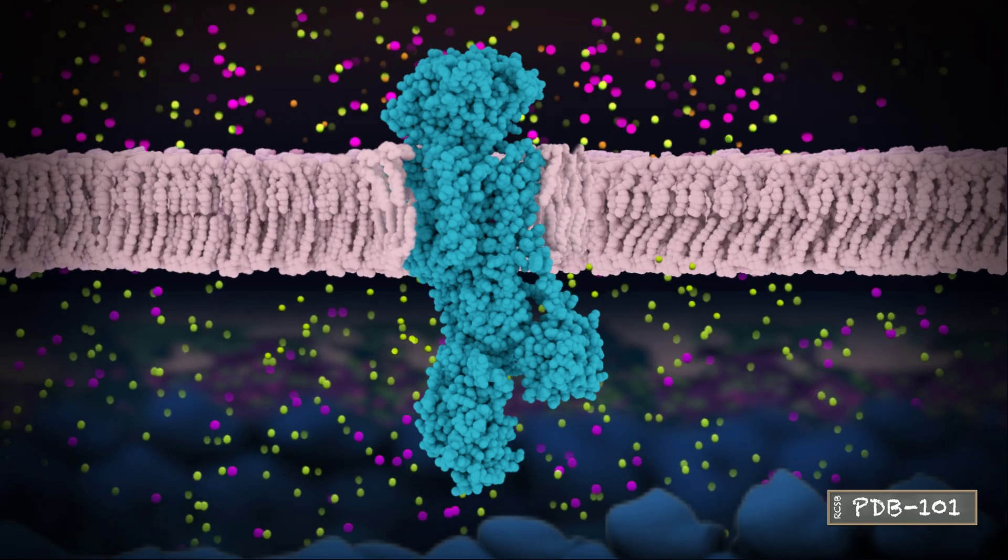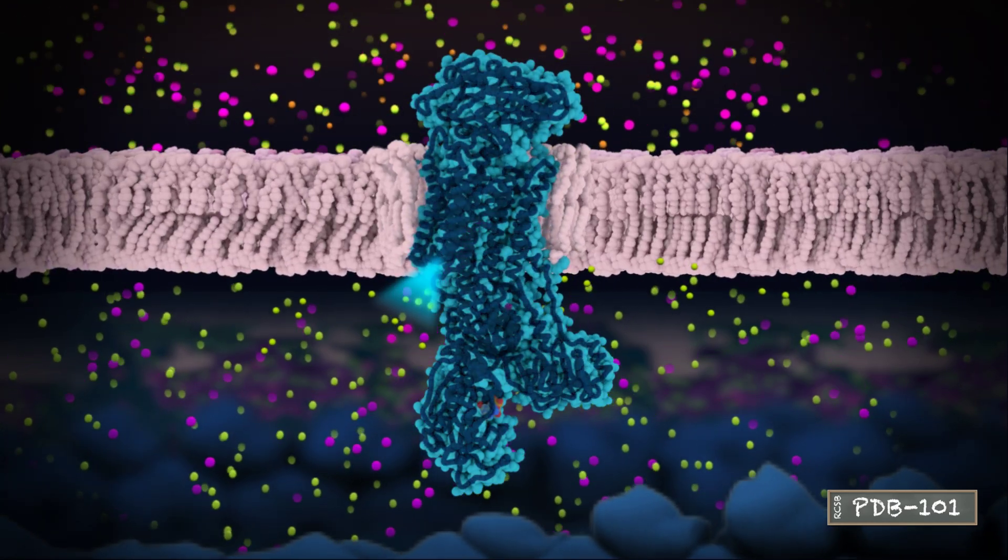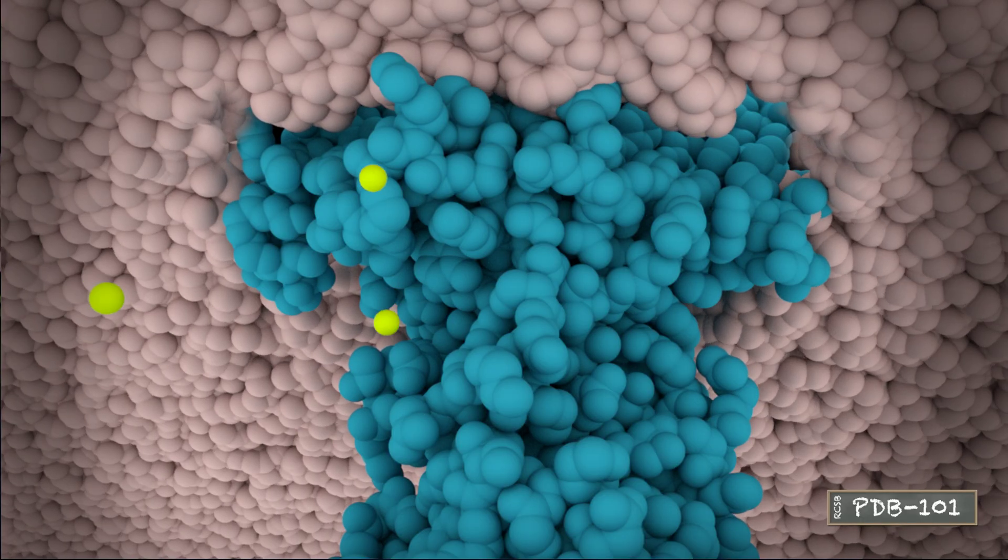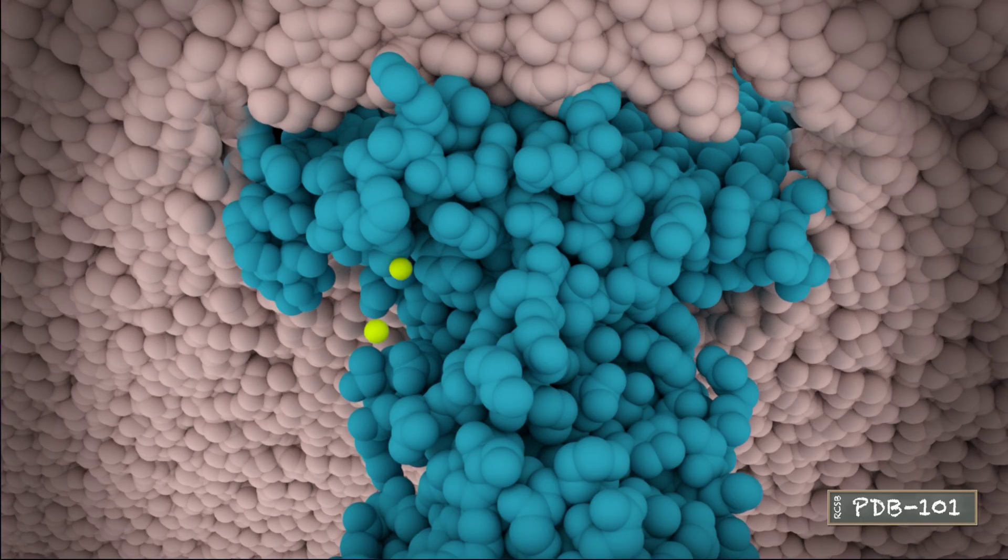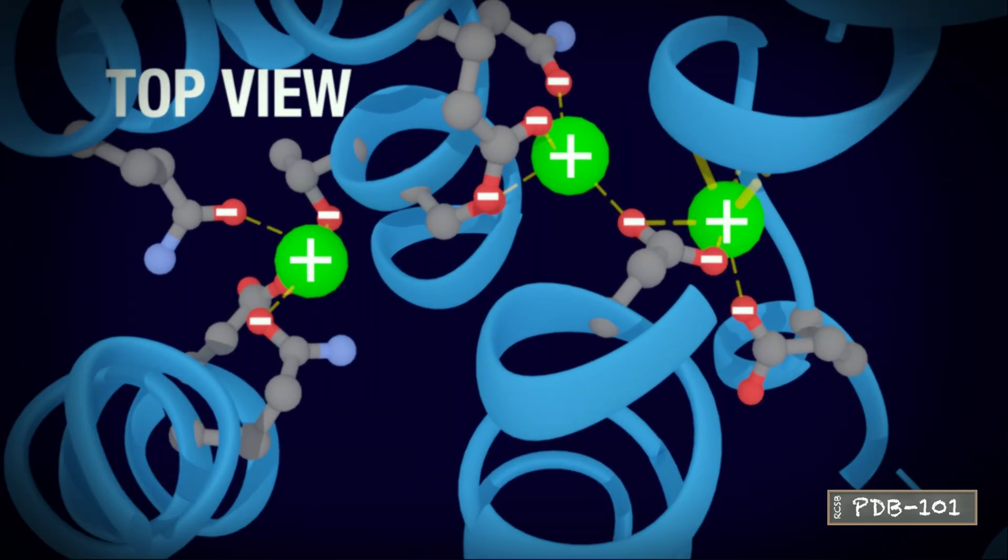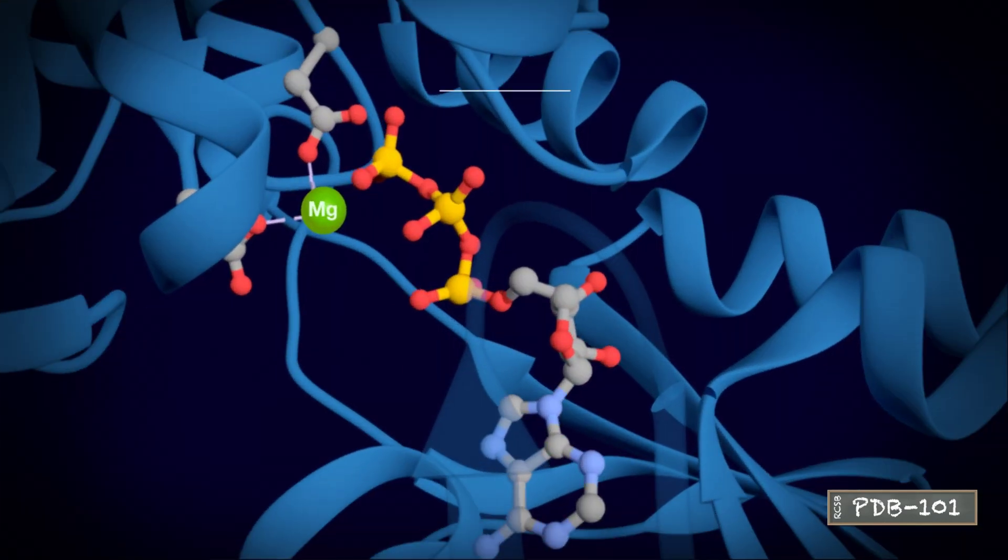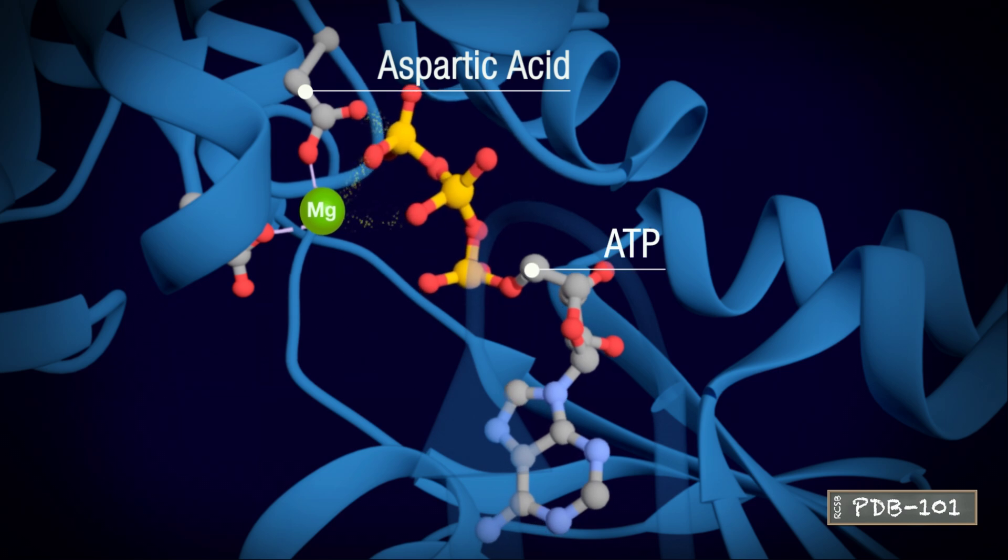The pumping cycle occurs in several steps. With ATP bound in the N-site and the transmembrane region open into the cell, the pump binds three sodium ions from the cytoplasm. This causes the N, P, and A sites to shift closer together. With the help of a magnesium cofactor, the P-site is phosphorylated and ADP is cleaved off.